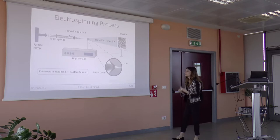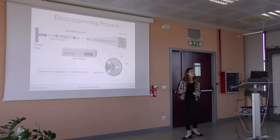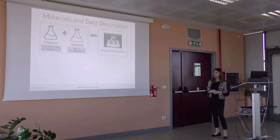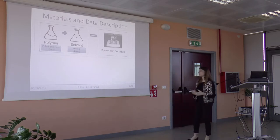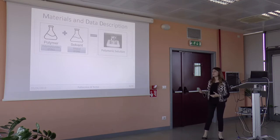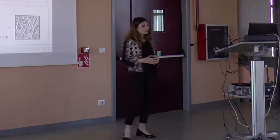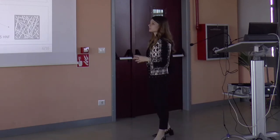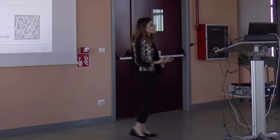The droplet takes the shape of a cone. Then, when the electrostatic repulsion is greater than the surface tension of the droplet, the Taylor cone becomes a jet from the tip of the syringe towards the collector, where the nanofibers are collected. The materials used are the polymer polyvinyl acetate (PVAC) and the solvent ethanol. The polymeric solution is created by dissolving the polymer in ethanol. The image dataset is built into two different datasets: non-homogeneous nanofiber images and homogeneous nanofiber images, labelled by an expert.